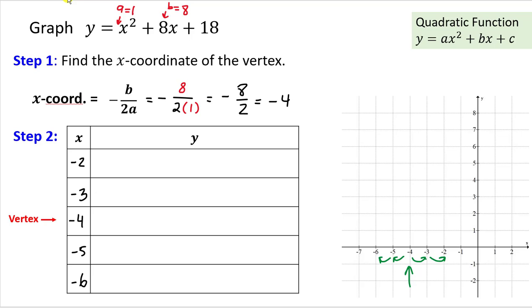Now we find the corresponding y-coordinates by plugging each x-value into the function. Starting with the vertex, x = -4: (-4)² + 8(-4) + 18 = 16 - 32 + 18 = 2. So the coordinates of the vertex are (-4, 2). Be sure to use parentheses when substituting negative numbers.